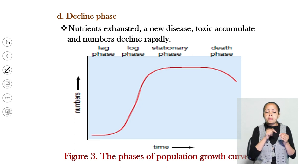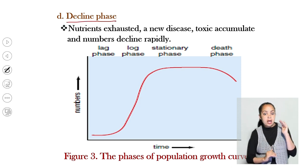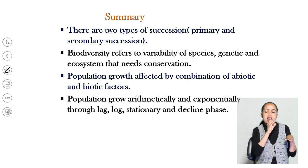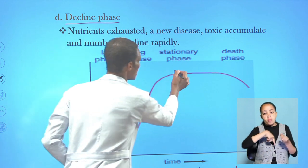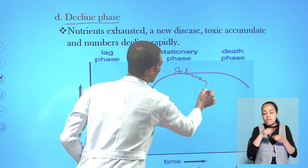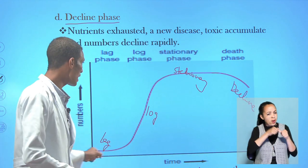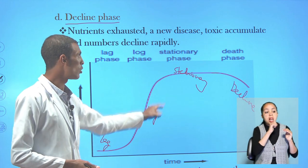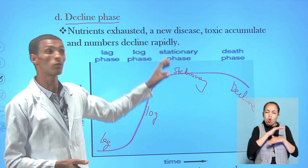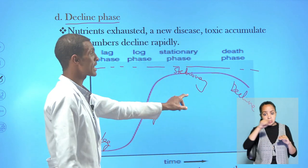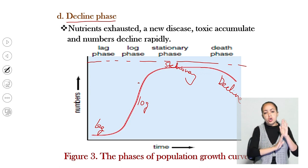When the environment becomes toxic to the population, they enter the decline phase — the fourth phase of population growth. To summarize: lag phase is the entry phase, the log phase shows J-curve growth, the stationary phase is where carrying capacity is maintained, and the decline phase follows. All populations grow through these four main phases in order. No population can grow above carrying capacity.